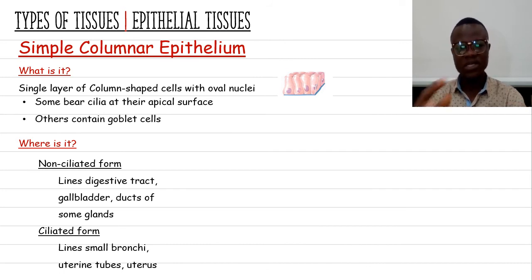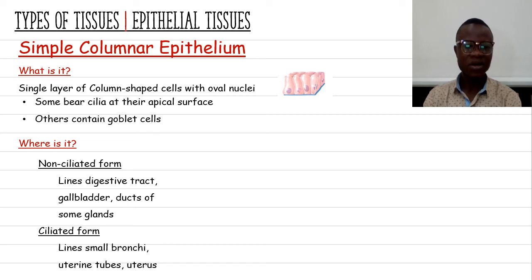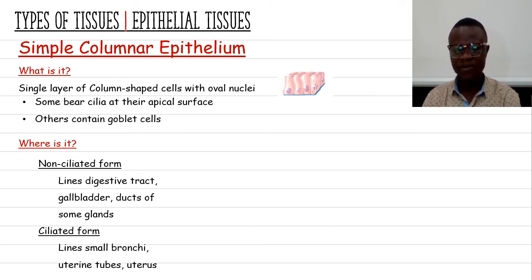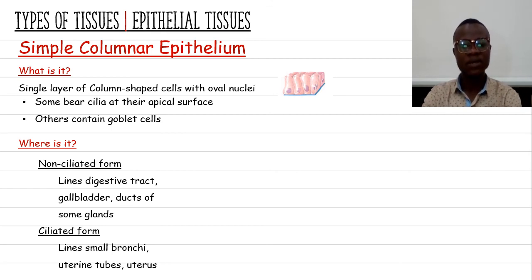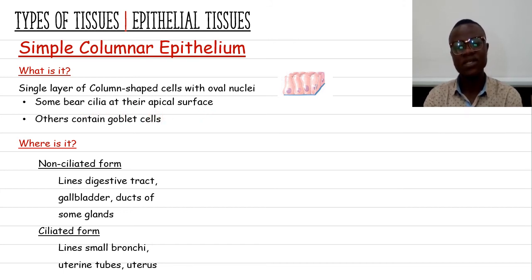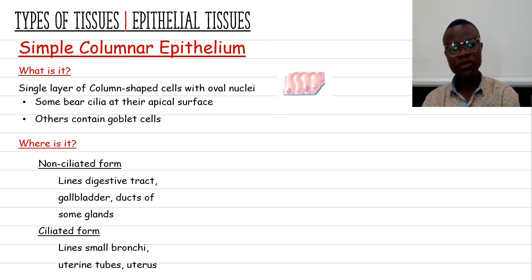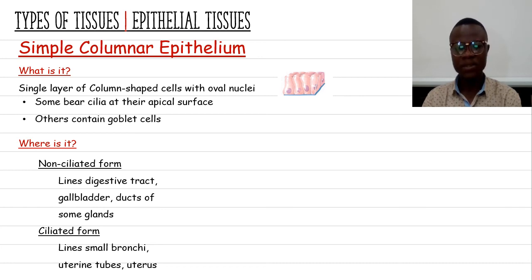The last group of simple epithelial tissue is the simple columnar epithelium. What is it? It is a single layer of column-shaped cells that have oval nuclei. Some of these cells can be modified — the simple columnar epithelium can have cilia at the apical surface and also goblet cells located among the cells within the tissue. The cilia at the apical surface facilitate movement of substances, as seen in the female reproductive system.